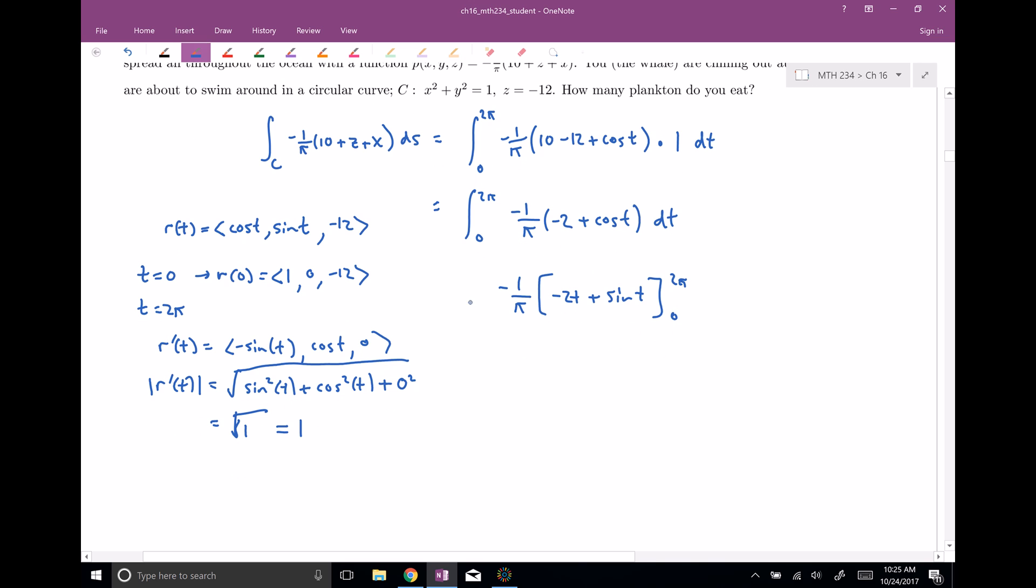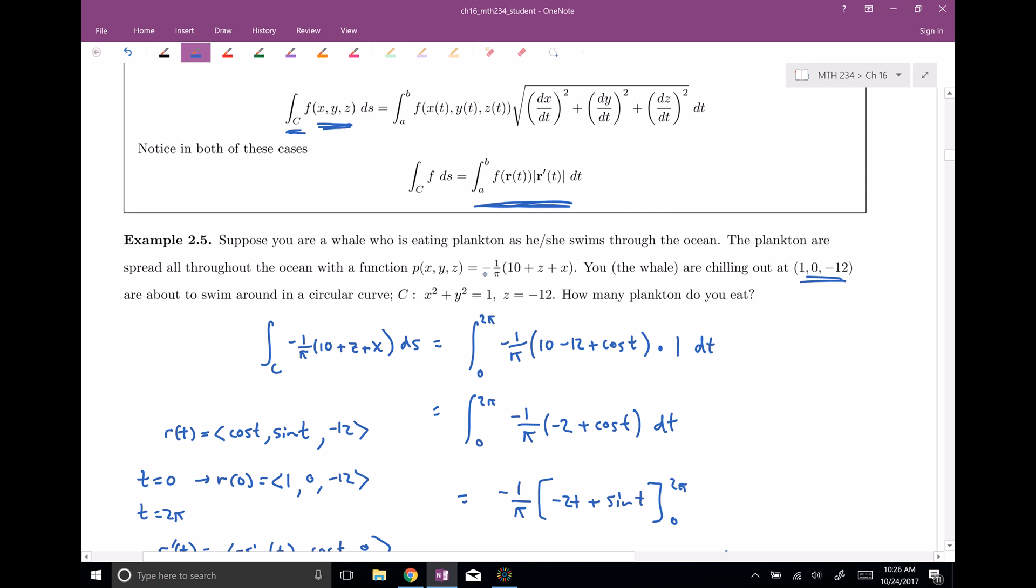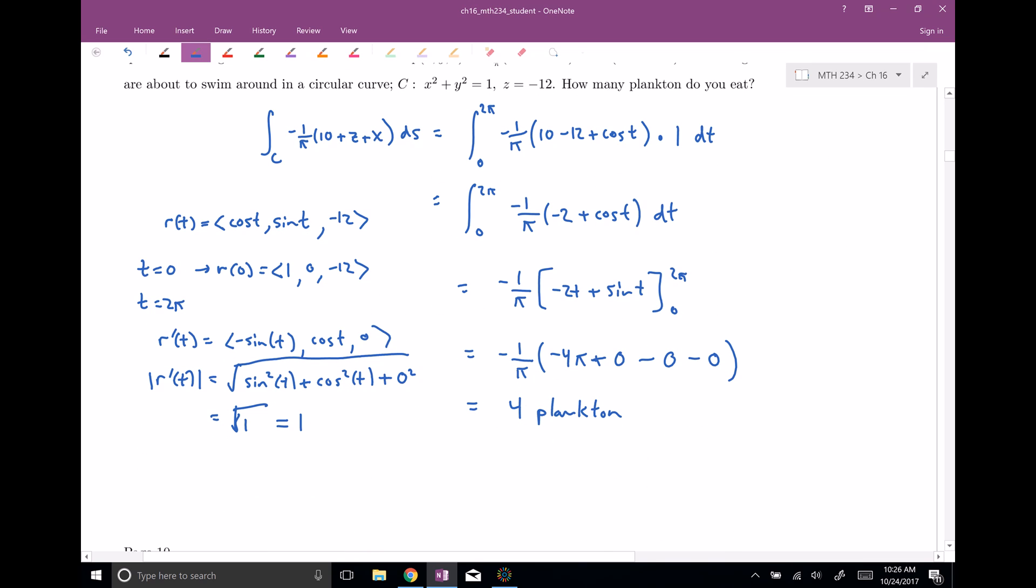Now let's go ahead and evaluate from zero to two pi. And so in this case, if I plugged in two pi, let's see, I'd get negative one over pi times, all right, so we'd get negative four pi, plus sine of two pi, well that's zero in this case. And now subtract away negative two zero, so that's just zero. And we're gonna subtract away sine of zero, which is also zero. So in this case, we can see that we in total eat four plankton. Not so great. I guess if you're the whale, but all right, fair enough. All right, now you can see why I had this negative one over pi out here. It's kind of somewhat contrived, but this gives us the nice whole integer number here.